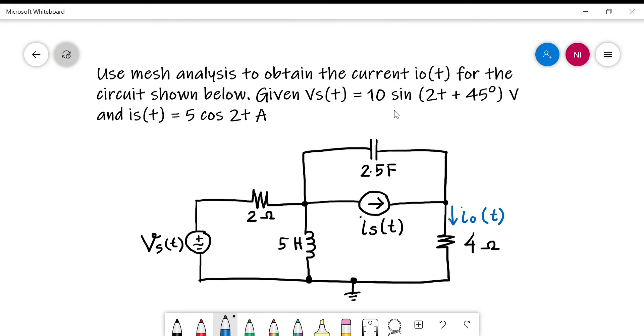The first thing to do is look at the given value of these sources. This is sine and this is cosine. You must standardize the form into one form only. For analysis, we use cosine. Now how to convert from sine to cosine?